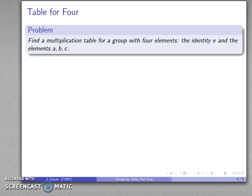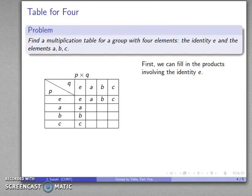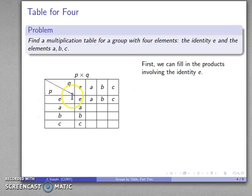So let's book a table for four. We want to find the multiplication table for a group with four elements. We'll call the identity E, and we'll name the elements A, B, and C. Because E is the identity, we can start by filling in the column and row that corresponds to multiplication by the identity, so we can fill in that first row and column.